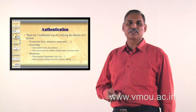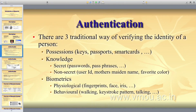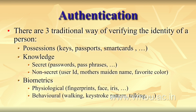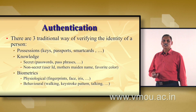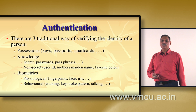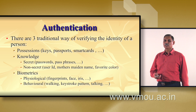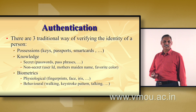There are three traditional ways of verifying the identity of a person. First is possession, like a key, passport, smart card, etc. Second is knowledge — a secret such as a password, PIN, or phrase, etc. Third is non-secret knowledge, like a user ID, mother's name, or favorite color, etc.